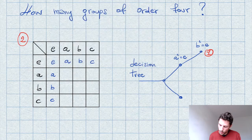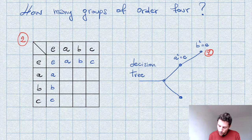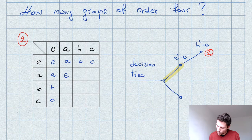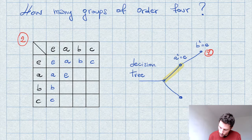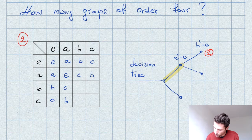Let's fill in the table for group number two. The first line and first column are the same since the identity always acts the same. For A squared, we again choose A squared equals E, which forces the other entries as before. But now we take another branch of the decision tree, namely B squared is different from E.